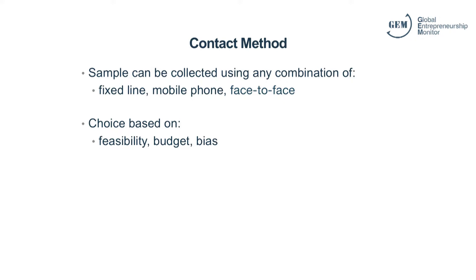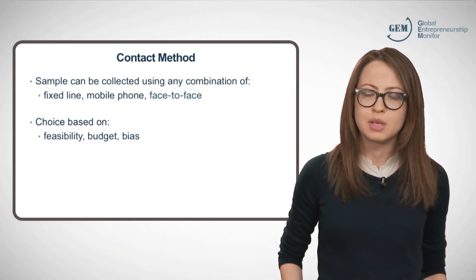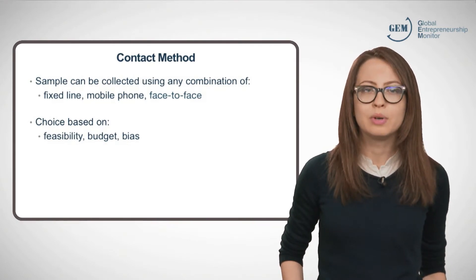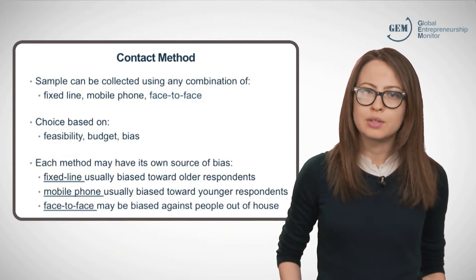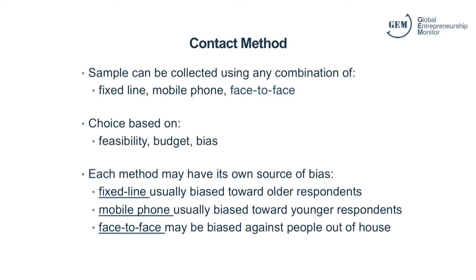Questions of feasibility may include determining the fixed-line penetration in your country or the ability to obtain an adequate mobile phone database. Though one contact method may be preferable, it may be far more expensive than another, which GEM also takes into consideration when evaluating a proposal. And of course, each method may introduce bias. For example, sampling by fixed-line is usually biased toward older respondents, mobile phone toward younger respondents, and face-to-face against people who are often out of the house. Your team must consider all these factors when proposing methodology.